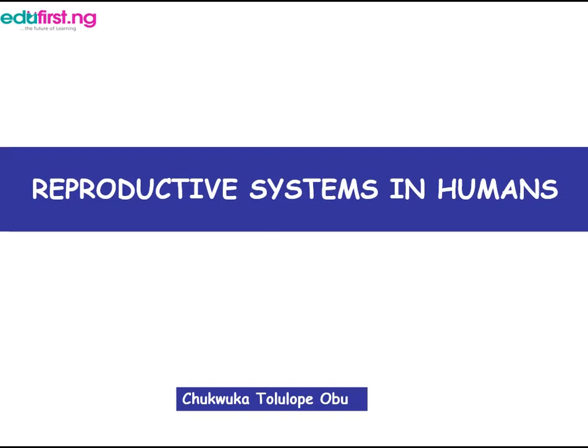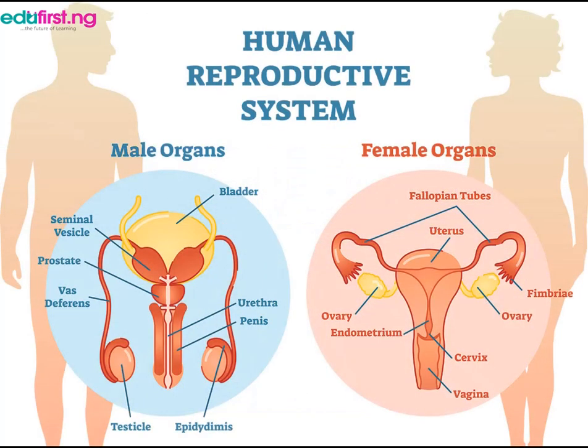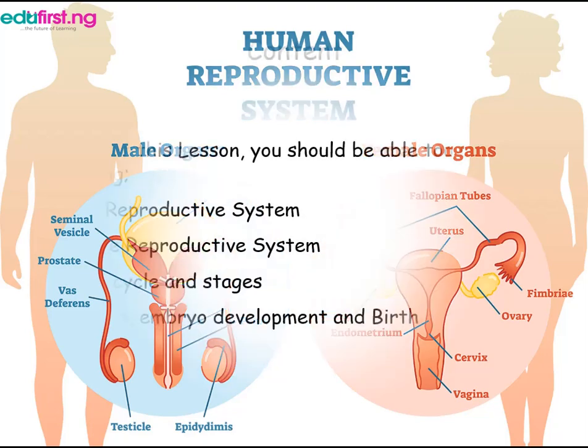Reproductive Systems in Humans. Biology is all about life. Chairs and tables don't reproduce themselves — only living things can do that. Therefore, it is important to know how reproduction takes place, the different organs that make up the reproductive systems, how each plays a role in fertilization, and also the various development processes.